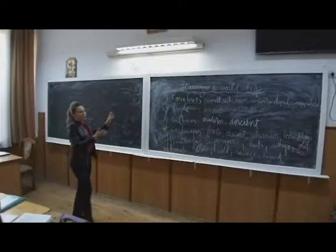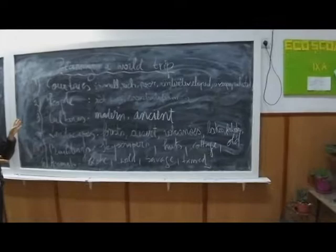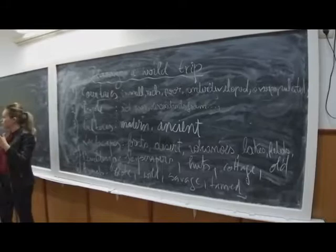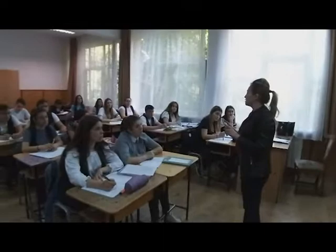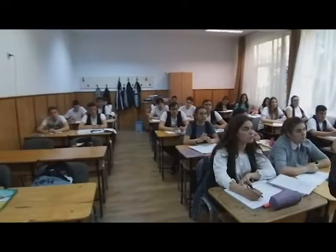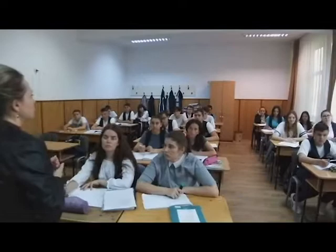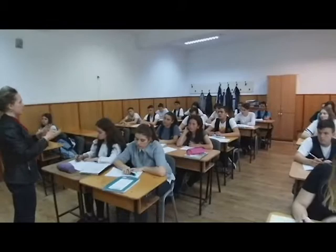Now we have the list of useful words on the blackboard. What you have to do now is use some of them for your descriptions. You have to plan and visualize your world trip in 41 days. The time limit is 10 minutes and this is an individual task. After you finish, I will randomly choose some of you to come in front of the class and read out their descriptions, and we'll vote for the best one.